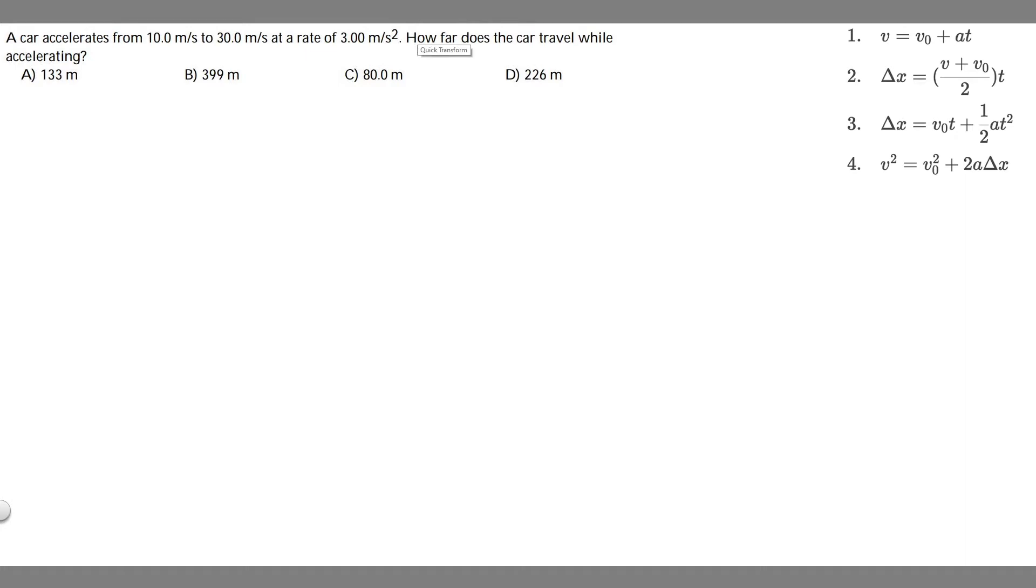First thing you always want to do is draw what's going on. So we have this car, and we know in the beginning the car is going to travel at 10 meters per second. So the initial velocity of the car, or v sub 0, is 10 meters per second.